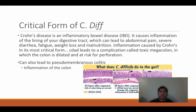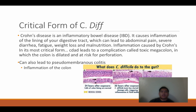The severe form of C. diff can lead to critical complications. One is Crohn's disease, an inflammatory bowel disease causing inflammation of the digestive tract lining, leading to pain, severe diarrhea, weight loss, and malnutrition. In its most critical form, inflammation leads to toxic megacolon — a dilated colon at risk for perforation where a hole forms — and also pseudomembranous colitis, which is inflammation of the colon.